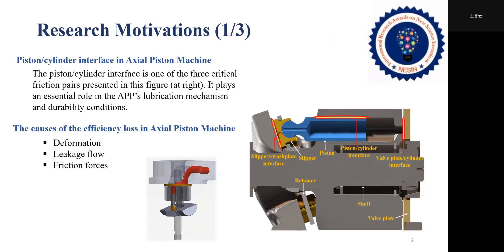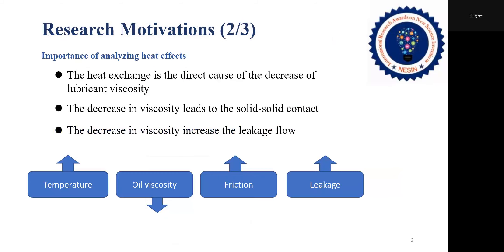The major causes of the efficiency loss on the piston-cylinder block interface in the axial piston pumps are deformation, which includes the hydrodynamic and thermoelastic deformation, leakage flow and friction forces. The leakage and friction forces are the direct source of the total power loss on the piston-cylinder interfaces. It is very important to study the effects of the heat on the interface of piston-cylinder to predict and evaluate the efficiency loss because the heat exchange is a direct cause of the decrease of lubricant viscosity.